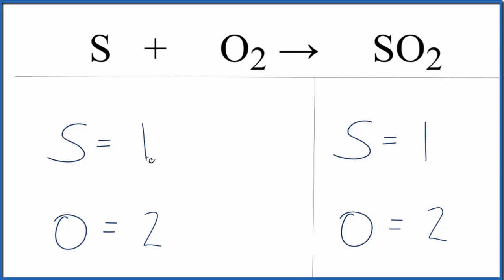But in this case, we have one sulfur and then on the product side, we have a sulfur. Those are balanced.